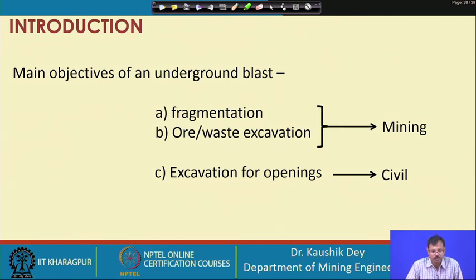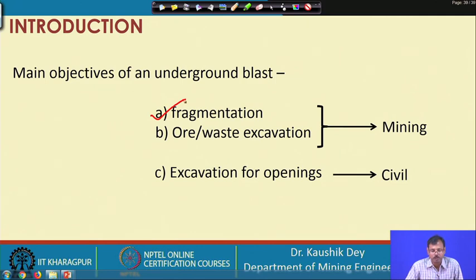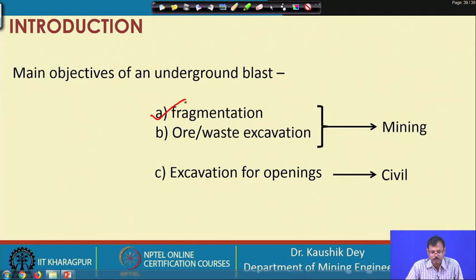Let us now understand why we carry out blasting in underground developmental drifts or underground openings. Our first objective is fragmentation. Why is fragmentation required? Because we want to excavate that area — that area is filled with rock mass. We want to fragment that rock mass into a number of small pieces so that our loading machine can handle those smaller pieces and they can be removed to create an opening. We drill the hole, insert the explosive, and then blast to fragment the rock. So the first objective is fragmentation.